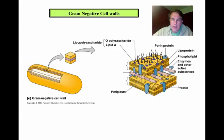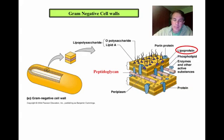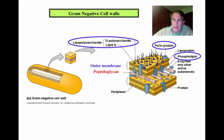Gram-negative cells tend to have a more complex cell wall composed of several layers. There is a peptidoglycan layer just like in Gram-positive cells, but you can see it's much thinner and it doesn't have the peptide cross bridges. There are instead lipoproteins that bind the peptidoglycan layer to the outer membrane. Outside the peptidoglycan layer is a second membrane — the outer membrane — that is composed predominantly of three different molecules: phospholipids, lipopolysaccharides, and porin proteins.